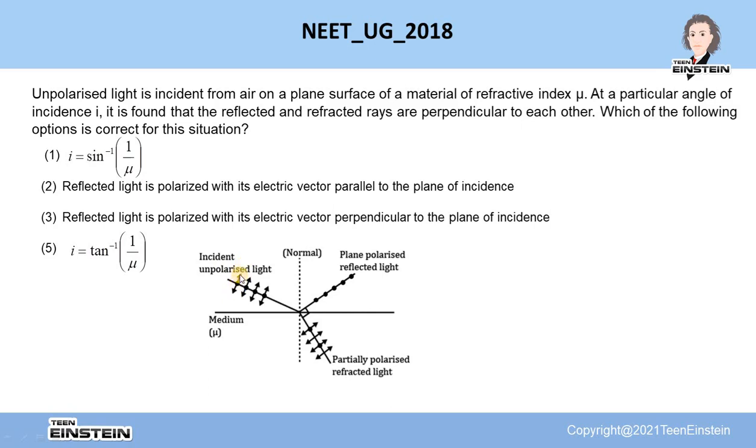You can see there are two arrows and there is a black dot over here. These two are representing two different kinds of electric field vector. The two arrows are representing the electric field vector which are vibrating in the plane of incidence. And this dot is representing the electric field vector which is vibrating perpendicular to the plane of incidence.